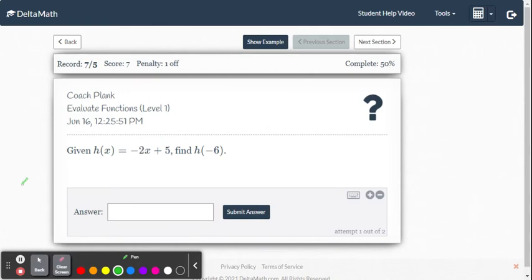Let's do one more. h of x equals negative two x plus five is our function. Find h of negative six. So h of negative six equals negative two multiplied by the negative six plus five.